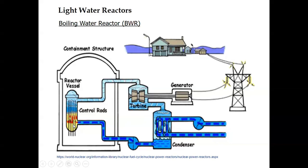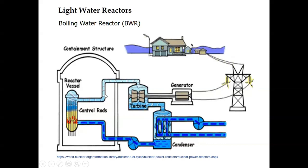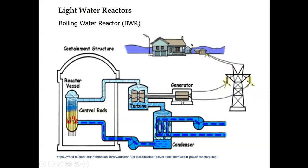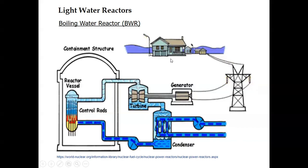In the boiling water reactor, water is allowed to boil at lower pressure, and steam goes directly to the turbine, then to the condenser, where water is condensed. This arrangement is relatively simple, but the efficiency is lower because of this two-phase system. The generator produces electricity with the help of the turbine, and electricity is passed to the grid for city use.